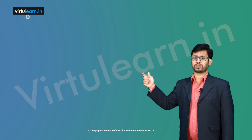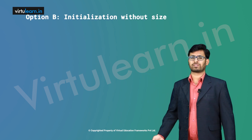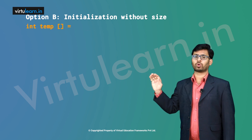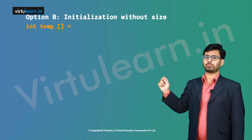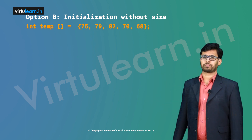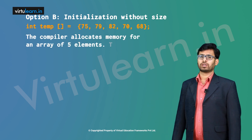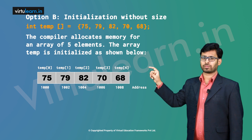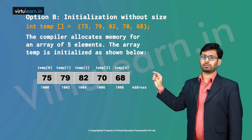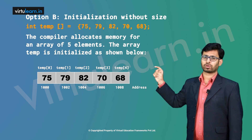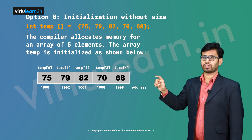Option B is initializing without size. If we don't know the exact number of elements to store, we write int temp[] with an empty subscript, equal to the values within curly braces: {75, 79, 82, 70, 68}. The compiler automatically allocates memory for an array of 5 elements. So temp[0] = 75 at address 1000, temp[1] = 79 at address 1002, temp[2] = 82 at address 1004, temp[3] = 70 at address 1006, and temp[4] = 68 at address 1008.